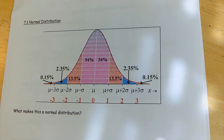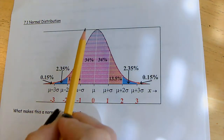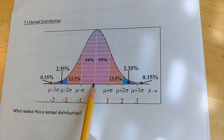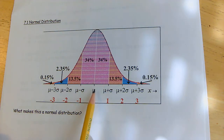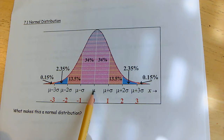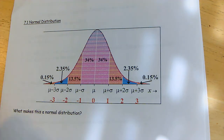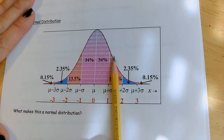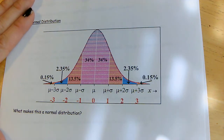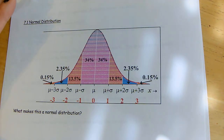The normal distribution has a bell shape with the mean, median, and mode in the middle, and is symmetrical around the mean. The z-formula translates any normal distribution to this standard number line where zero is at the mean, and we move one, two, or three standard deviations above or below. Remember, all the area under the curve totals one because it is a probability distribution.